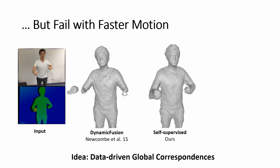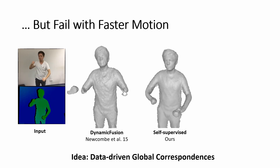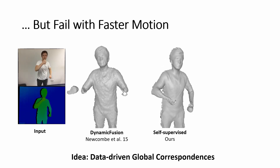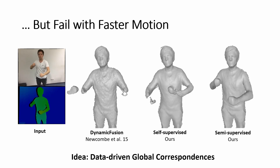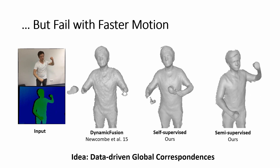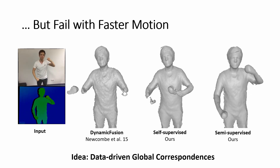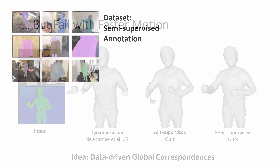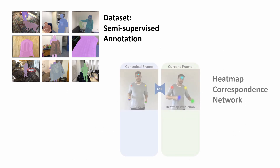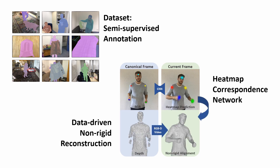One key challenge is how to obtain good training data. Self-supervision is one way to obtain training samples, by recording deforming objects and using existing reconstructions to compute correspondences. However, this is insufficient for generating training samples of fast motion and challenging deformations, for which we need supervised annotations. We first introduce a semi-supervised data collection method for creating our dataset, employ this data to train a non-rigid correspondence prediction network, and incorporate the predicted correspondences into a non-rigid reconstruction approach to enable robust reconstruction, even of fast motion.